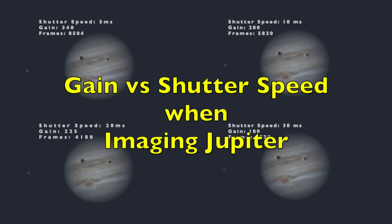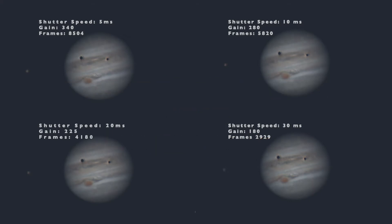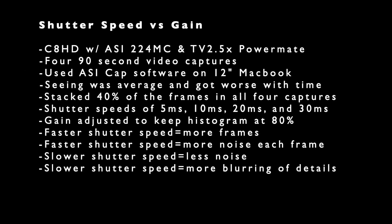Hey, it's Steve! This is just a quick video showing some comparisons between different gain and shutter speed settings when doing some imaging of Jupiter. I'm using a Celestron 8-inch Edge HD telescope with an ASI 224MC camera to do my planetary imaging. I wanted to compare different settings of gain and shutter speed because you have some trade-offs with both of those.